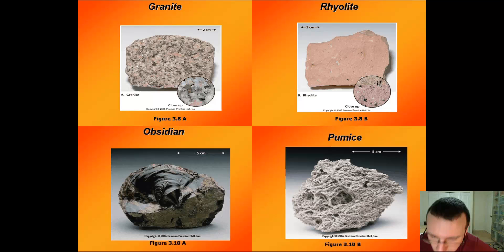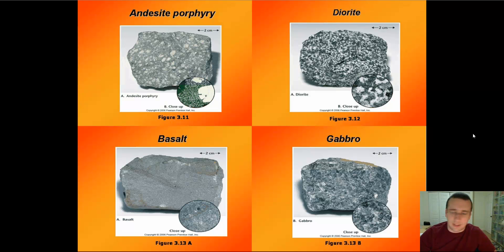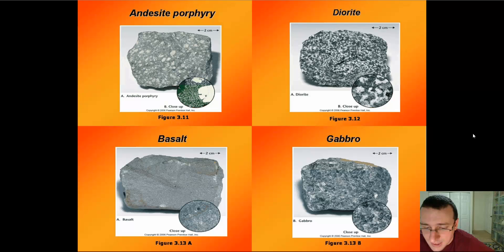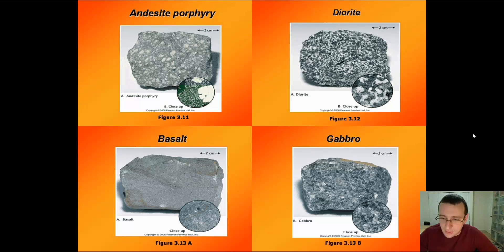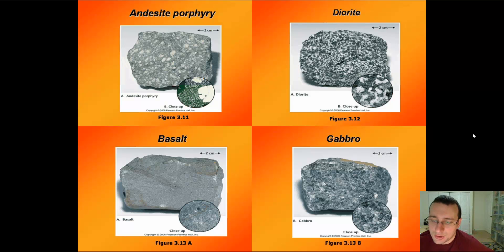There are also intermediate kinds of igneous rocks: andesite and diorite. These look a little felsic and a little mafic. Andesite is the extrusive version and diorite is the intrusive version. Andesite will resemble rhyolite — it will be aphanitic or fine-grained. Diorite will resemble granite — it will be a little more coarse-grained.